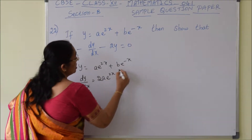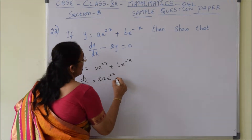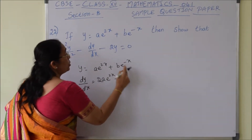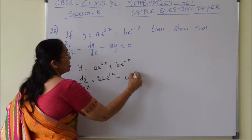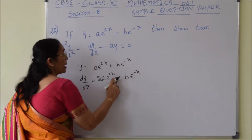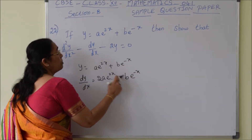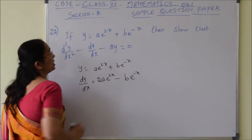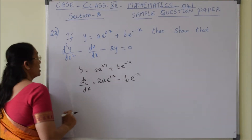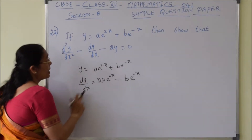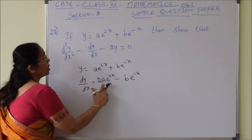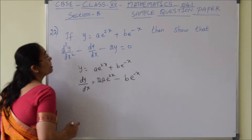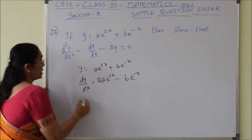Similarly, the second term differentiation gives b into e^(-x), and the differentiation of e^(-x) is e^(-x) into minus 1, that is why instead of plus I have written minus. So dy/dx is 2ae^(2x) minus be^(-x).